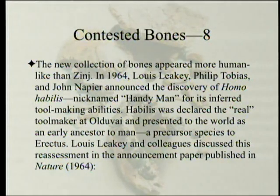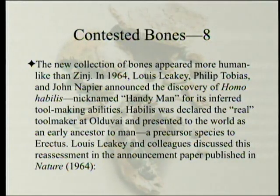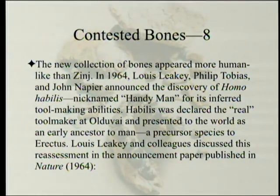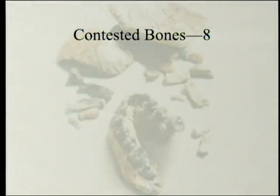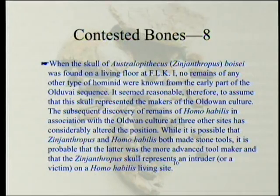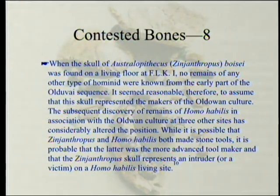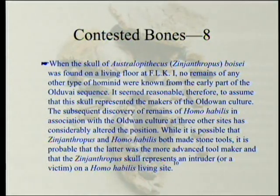In 1964, Lewis Leakey, Philip Tobias, and John Napier announced the discovery of Homo habilis — 'handyman' — for its inferred toolmaking abilities. Habilis was declared the real toolmaker at Olduvai and presented to the world as an early ancestor to man, a precursor species to Erectus. Lewis Leakey and colleagues discussed this reassessment in their announcement paper published in Nature in 1964. Notice this is Lewis Leakey, who originally called it Zinjanthropus. By this time in their 1964 paper, when referring to the skull of Australopithecus boisei (Zinjanthropus in parenthesis), that creature was already being reclassified. The paper states: 'No remains of any other type of hominid were known from the early part of the Olduvai sequence. It seemed reasonable therefore to assume that this skull represented the makers of the Olduvai culture.'